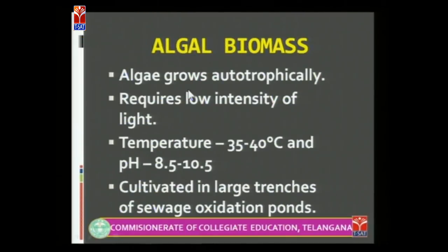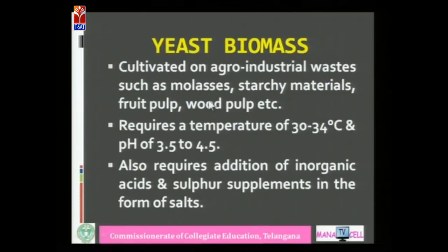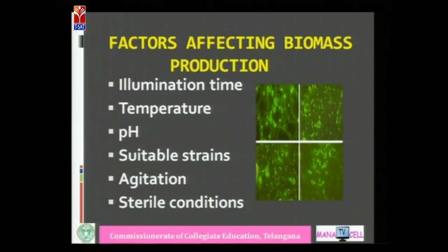As algae are autotrophic, they require sunlight; temperature must be 35 to 40°C and pH 8.5 to 10.5, and they can be grown in oxidation ponds. For bacterial and fungal mass, they can be grown on a wide range of substrates, requiring temperature of 15 to 34°C and pH of 5 to 7. Yeast can also be grown on a wide variety of substrates, requiring temperature of 30 to 34°C and pH of 3.5 to 4.5. Factors affecting SCP production include generation time, temperature, pH, suitable strain, agitation — that is, mixing of components — and sterile conditions.